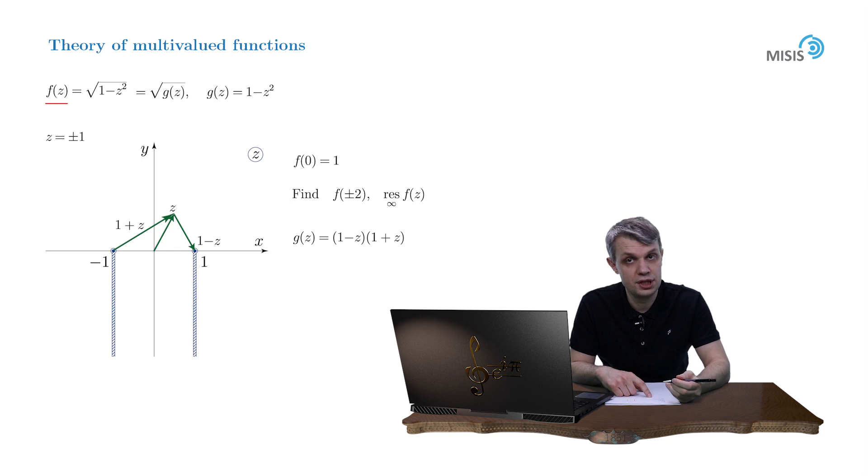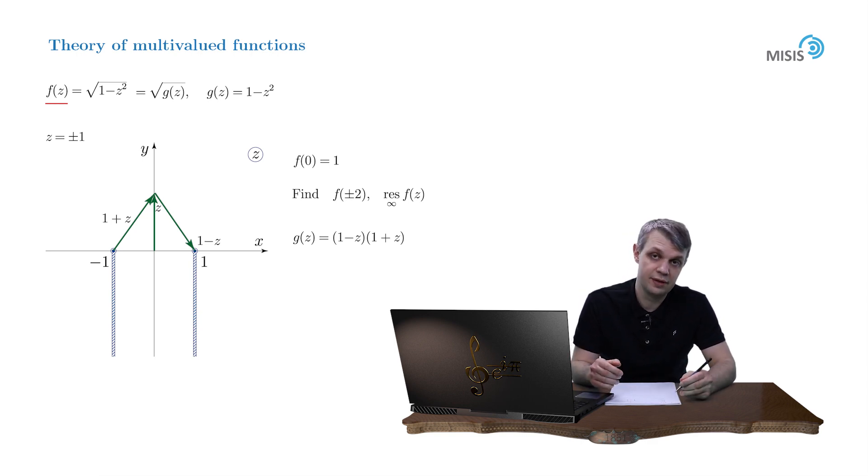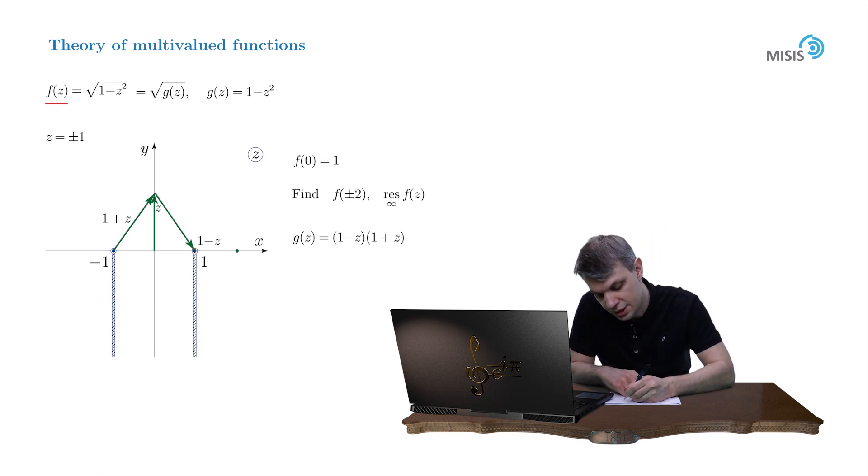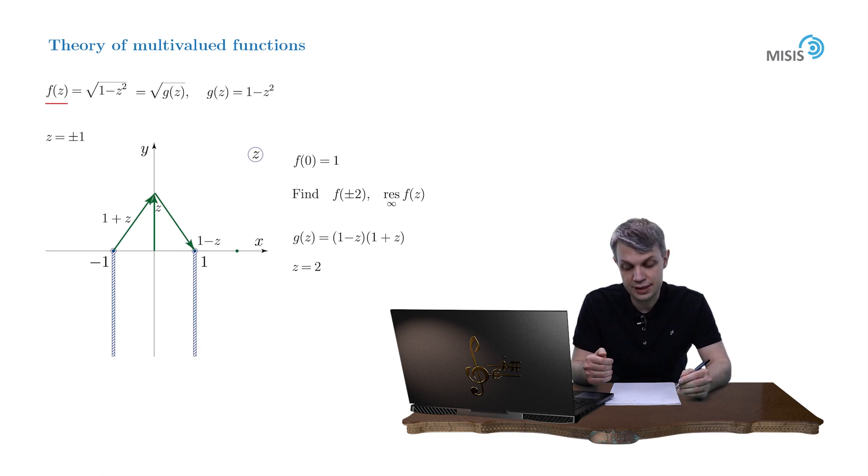Wherever we change the destination point z in the complex plane, these two arrows rotate around the branch points. Let's find the value of our regular branch at point 2. So our destination point is z equals 2. According to our general schematic, we draw a contour connecting the reference point and the destination point.